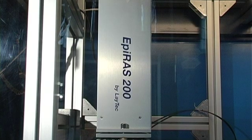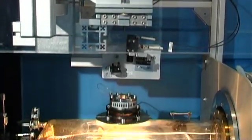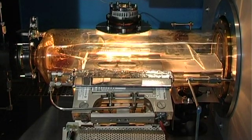Here you see the EPI-RAS installed above a research-type MOVPE reactor. It measures both the reflectance and the reflectance anisotropy of the growing layers spectroscopically. The method is so sensitive that you can actually see the monolayers grow and even identify the orientation of the atoms on the semiconductor surface.